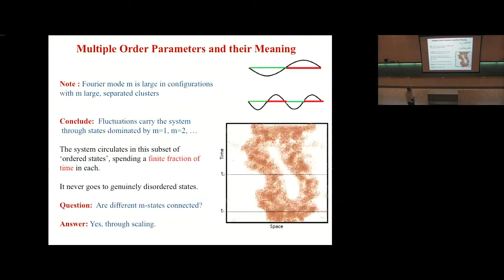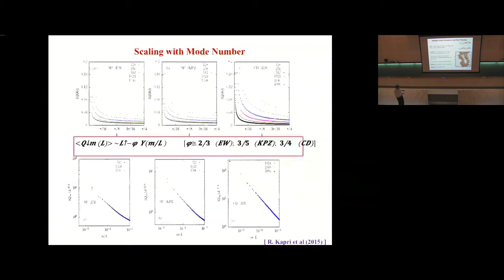Here is a pictorial representation of what is happening. Here is space, here is time. Here you have one cluster. And then as time passes, maybe the cluster breaks up into two parts. When it breaks up into two parts, your first Fourier mode won't sense it, but the second one will. The point is that this system actually circulates in this subset of space of large Fourier modes, M equal to 1, 2, 3, but it never goes into a disordered state and it spends a finite fraction of time in each one. This is unlike any other sort of phase ordering you might imagine.